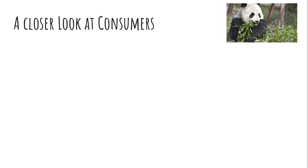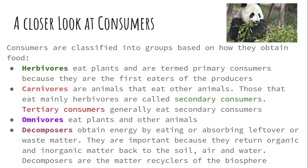Looking at all types of consumers: you have herbivores, carnivores, and omnivores. Herbivores eat plants; carnivores eat animals. When we look at carnivores specifically, it breaks into another array — we have primary, secondary, and tertiary consumers — essentially animals that eat other animals.